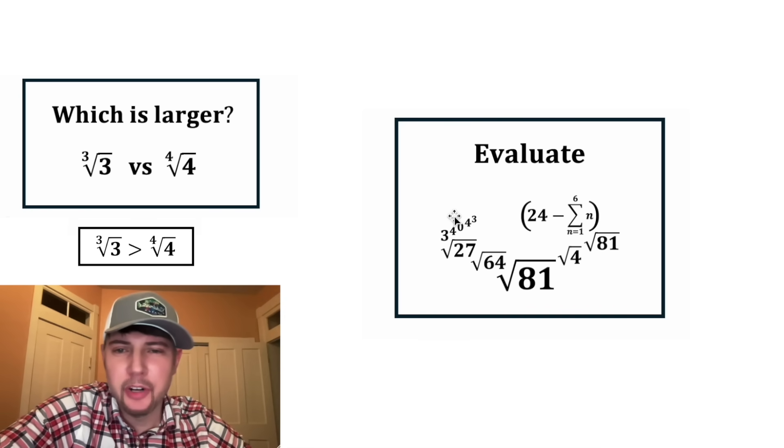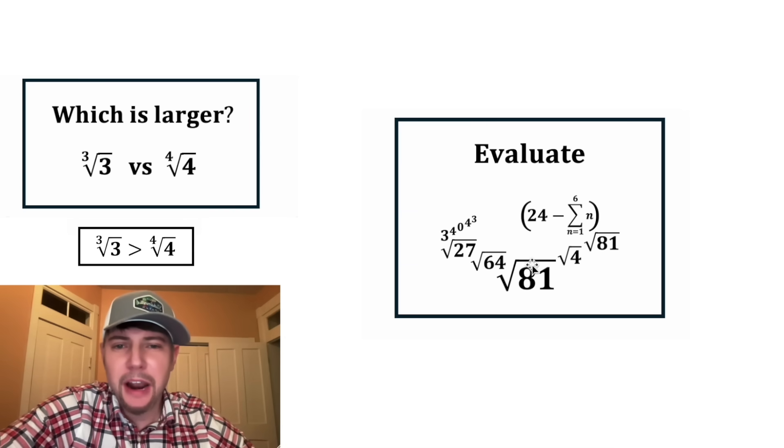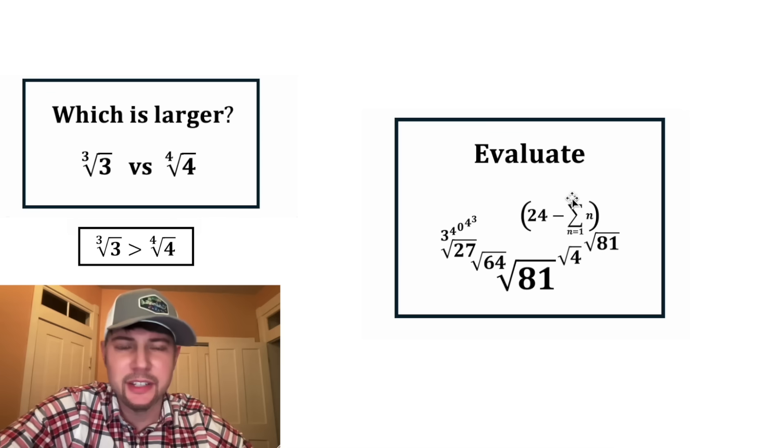It's the 3 to the 4 to the 0 to the 4 to the 3th root of 27th root of 64th root of 81, to the power of the square root of 4 to the power of the 24 minus the sum of 1 to 6 of nth root of 81. This looks like it'll be a fun one. How exciting.